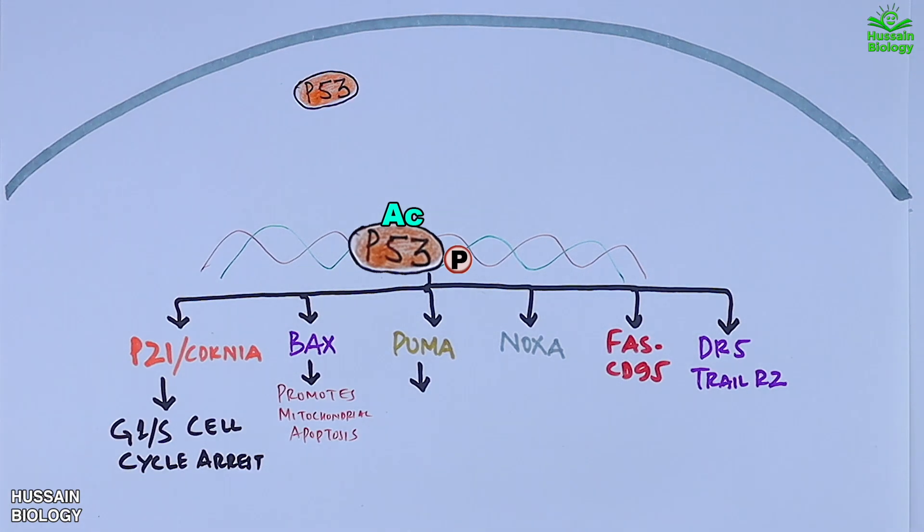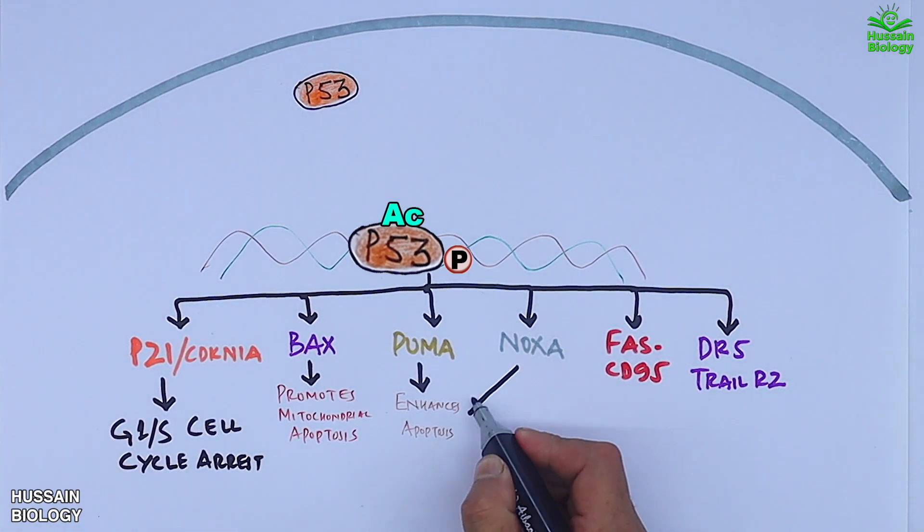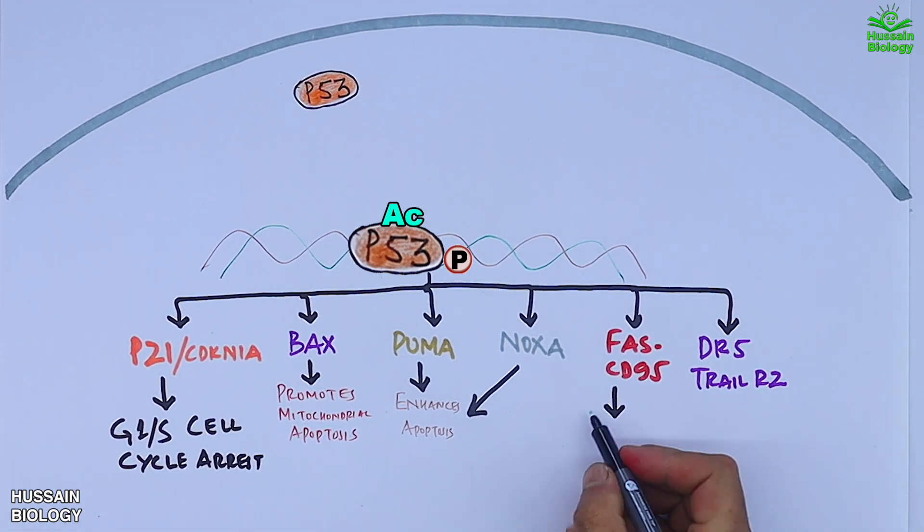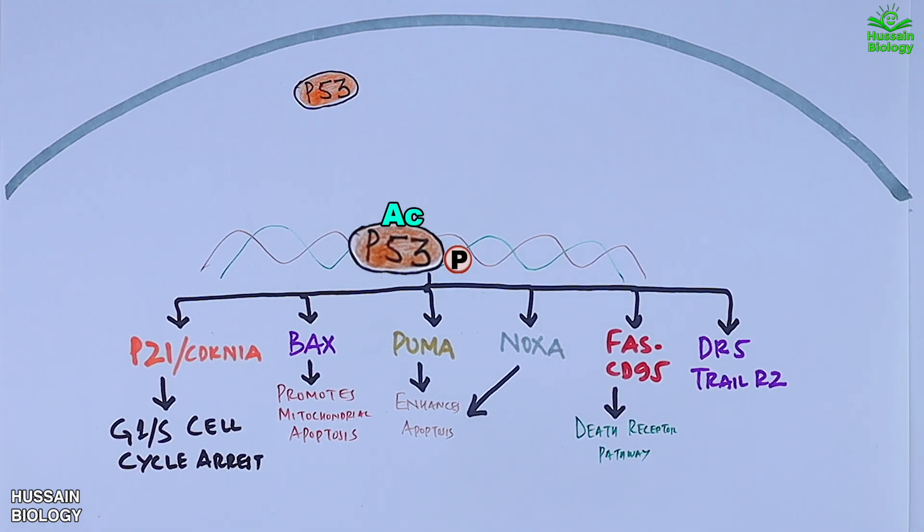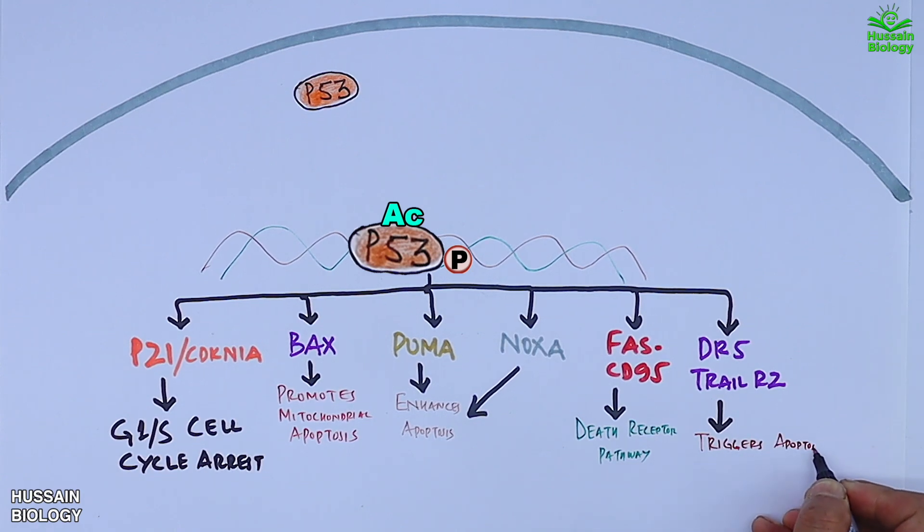FAS/CD95 also drives apoptosis via death receptor pathway, and finally we have the DR5 molecule which triggers apoptosis via TRAIL.